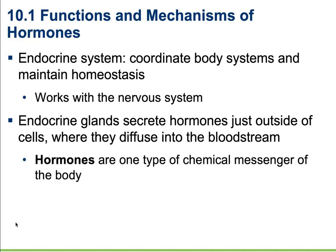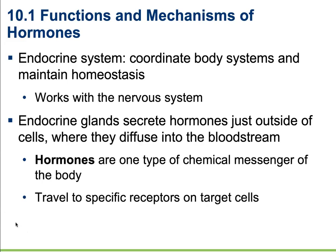Hormones are just one type of chemical messenger in the body. Endocrine glands secrete into the interstitial fluid, whereas exocrine glands secrete their products into ducts, which lead to body surfaces or cavities — spaces within the organs. Oil and salivary glands are great examples of exocrine glands.